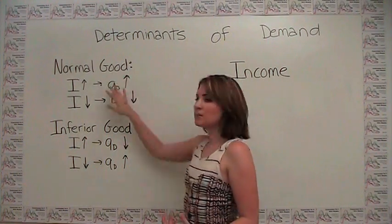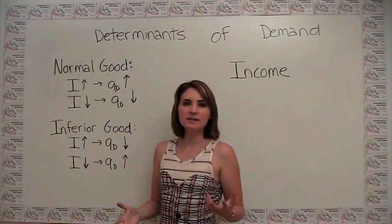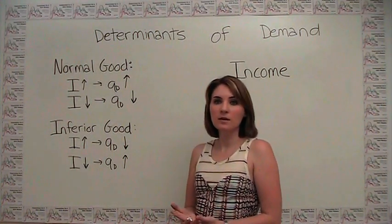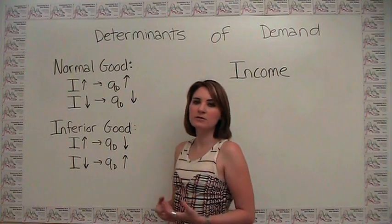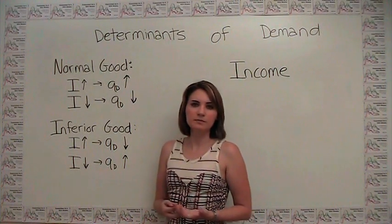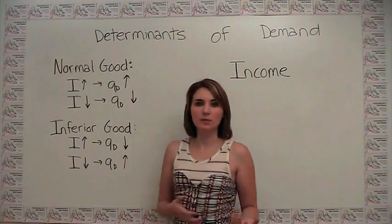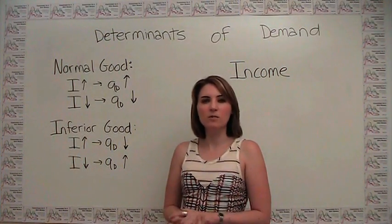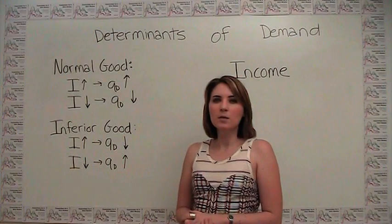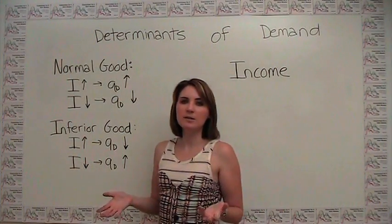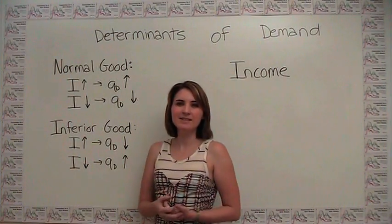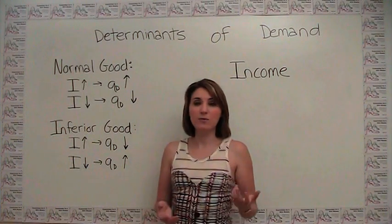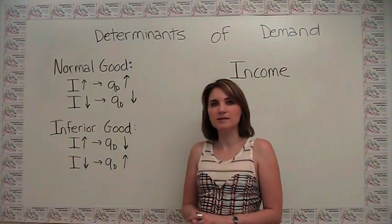There are also some goods which, at least in a general sense, are neither normal nor inferior — they are fairly unresponsive to changes in income. For example, toilet paper is probably neither a normal nor an inferior good, because regardless of how much income a consumer has, the amount of toilet paper they are willing and able to consume probably doesn't change a whole lot.